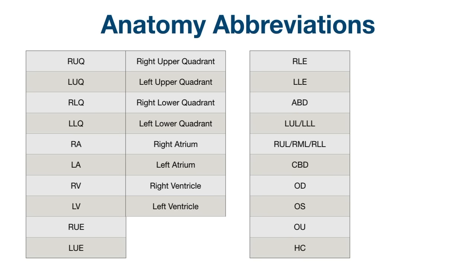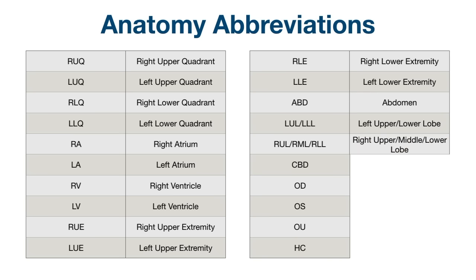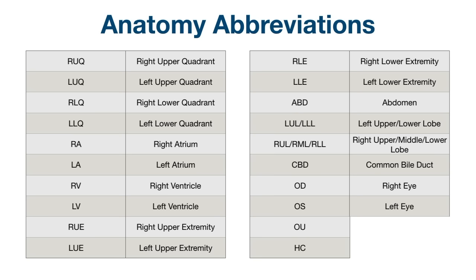As we move to the extremities — RUE: right upper extremity. LUE: left upper extremity. RLE: right lower extremity. LLE: left lower extremity. ABD stands for abdomen. The lung fields can be broken up as well: LUL or LLL for left upper or lower lobe; RUL, RML, RLL for right upper, middle, or lower lobe. CBD: common bile duct. OD: right eye. OS: left eye. OU: both eyes. HC: head circumference.